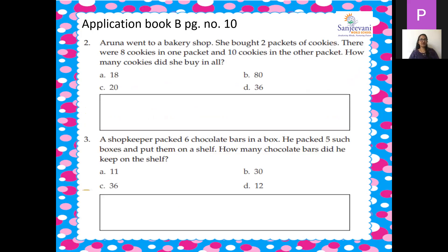Now Aruna went to a bakery shop. She bought 2 packets of cookies. There were 8 cookies in one packet and 10 cookies in the other packet. How many cookies did she buy in all? So there were 2 packets children. There are 2 numbers given, 8 and 10. So can you tell me how will I do it?